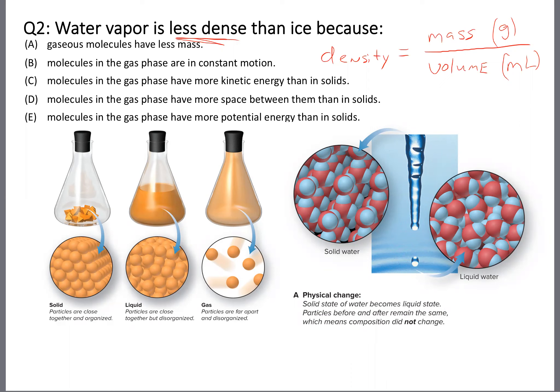We want to explain why water vapor is less dense than ice. Reading into this question, it seems like maybe it has something to do with our three phases of matter.